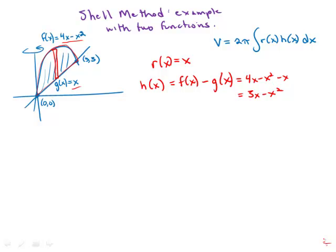So now we have r of x and h of x. So we're ready to write down the integral. V equals 2 pi times the integral from x equals 0 to x equals 3 of x times 3x minus x squared dx.